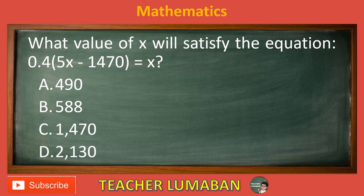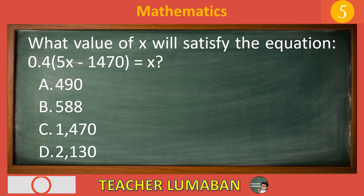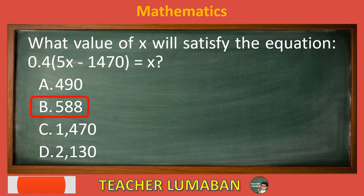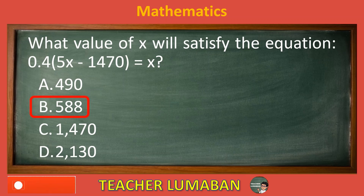Choose the suitable answer based on the given choices in 5 seconds. 5, 4, 3, 2, 1. The correct answer is letter B, 588. 588 is the value of X that will satisfy the equation 0.45X minus 1470 equals X.